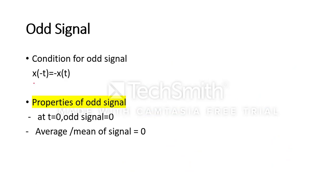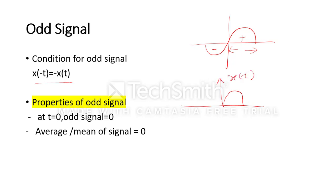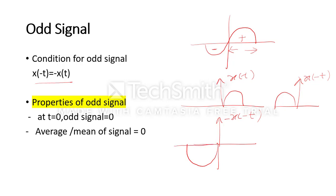Odd signal condition is x(-t) should be equal to minus x(t). Suppose the signal has one positive cycle and one negative cycle. If x(t) is given, then x(-t) will be its mirror image, and minus x(-t) will flip it again. When we combine the signal it looks like a sine wave going up to infinity — so the sine signal is one example of an odd signal.